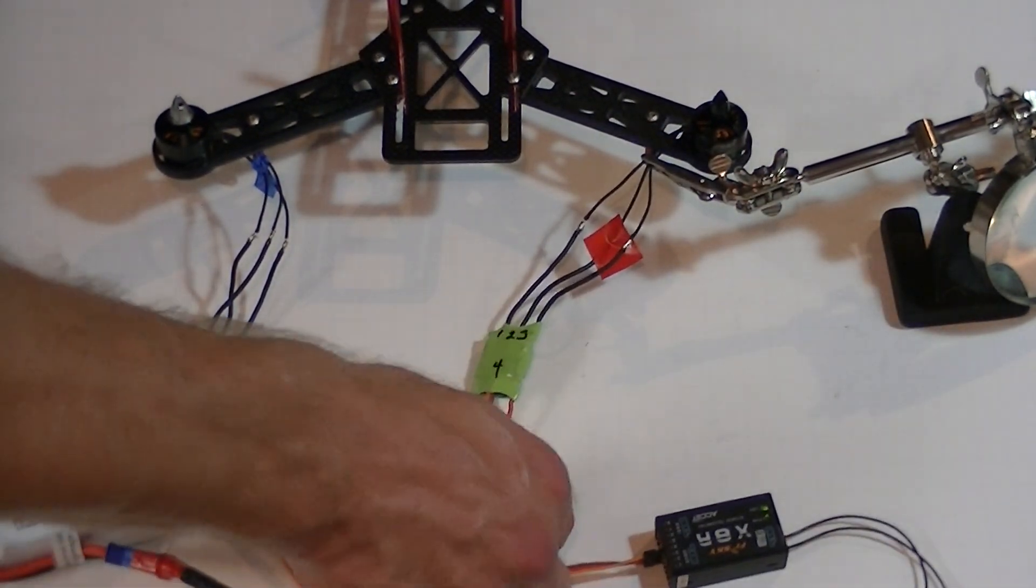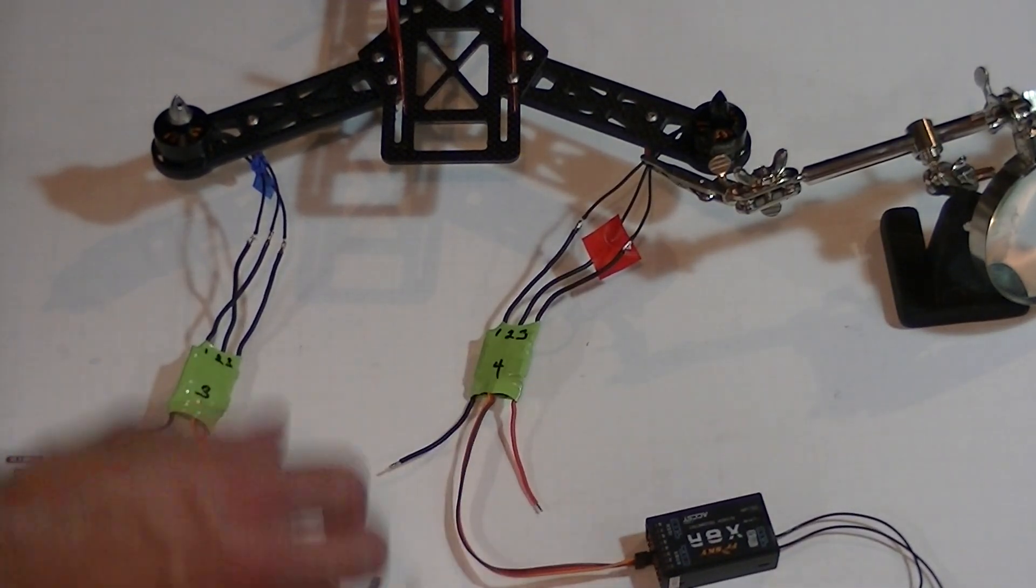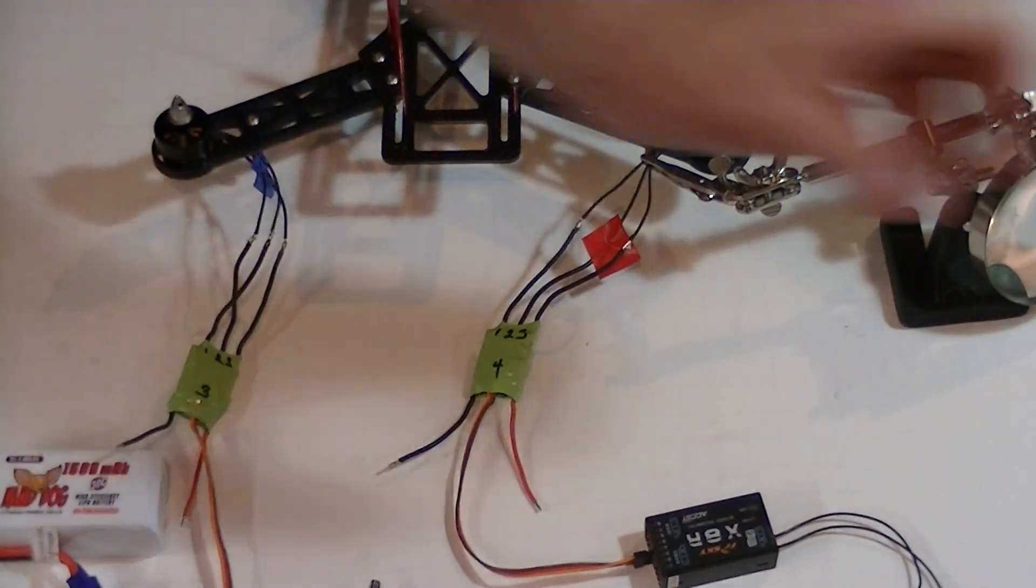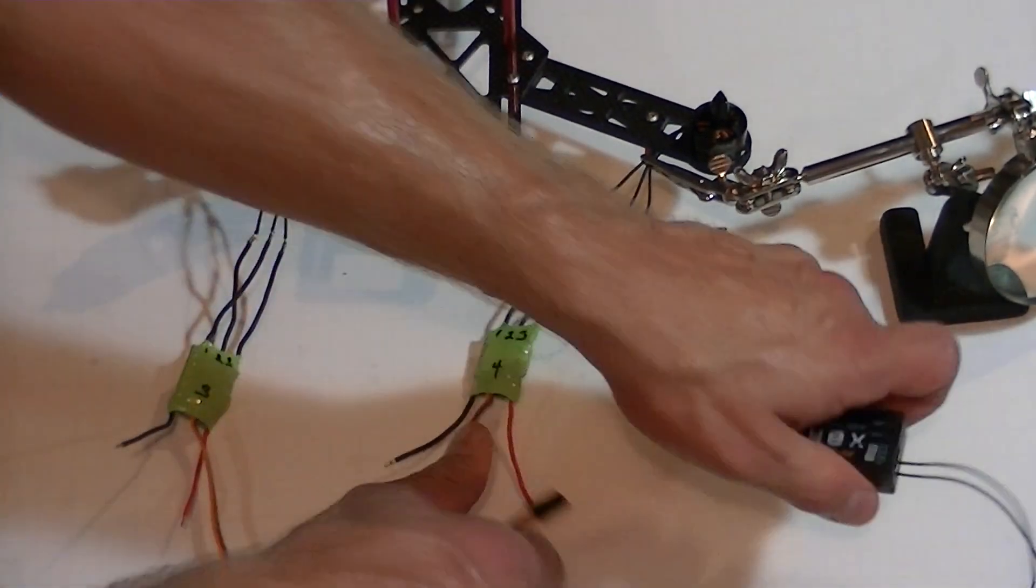So I'm going to hold the throttle down. Unplug the power. Done. Telemetry is lost. Big deal. Shut the radio off. Put that down. Pull this off so I don't cross these accidentally. Pull this out.